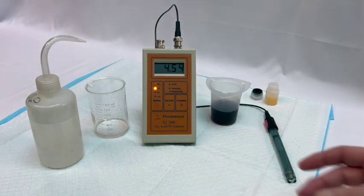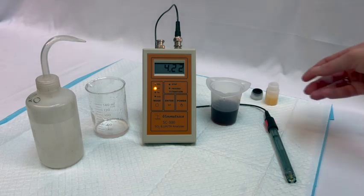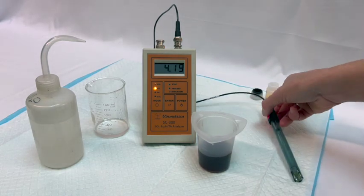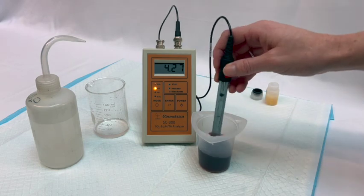You can gently flick off water droplets from the pH electrode if you want. Gather your wine sample. You will need enough wine to bring the volume up above the tip of the electrode.